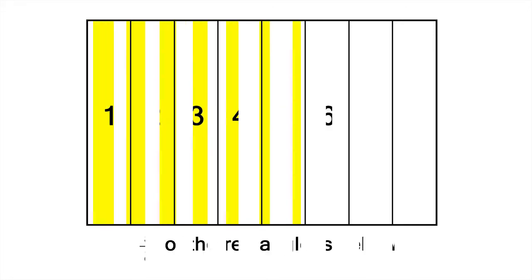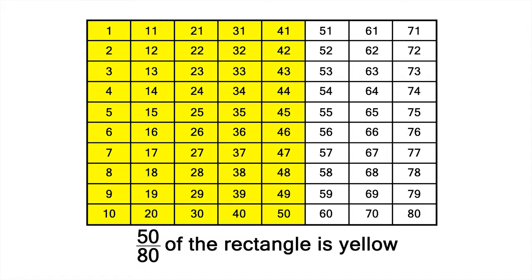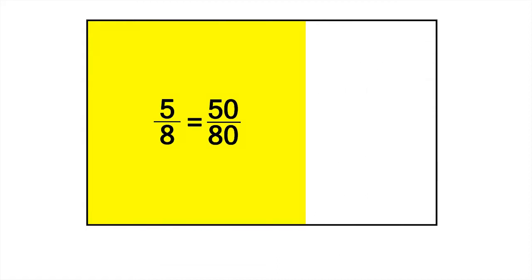Another way to see this is using a diagram. Let's divide a rectangle up into eighths, and color 5 eighths of the rectangle yellow. Now let's see what 50 eightieths looks like. The relative amount of yellow hasn't changed, so 5 eighths has the same value as, or is equivalent to, 50 eightieths.